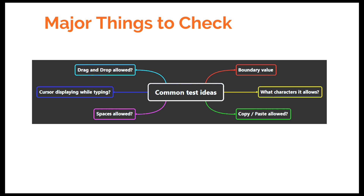On the right side of the mind map, you can see you need to check for boundary values, what characters are allowed, and whether copy-paste is allowed or not. On the left side are the negative and important test cases: checking whether drag-and-drop is supported, whether the cursor is displayed while typing, and whether spaces are allowed or not. These are the basic test cases covered by this mind map.